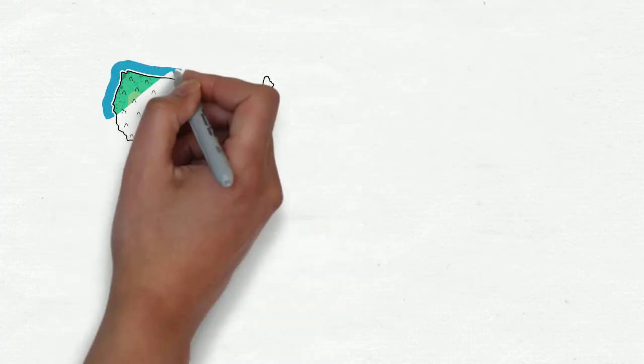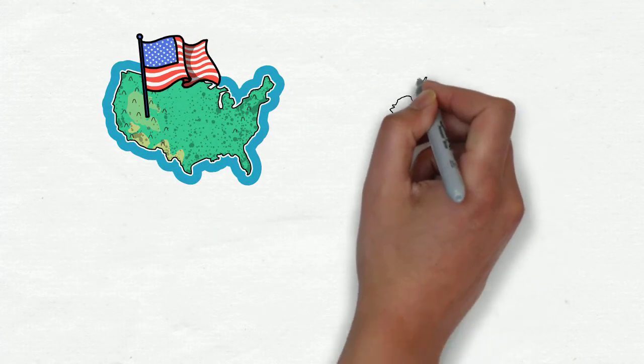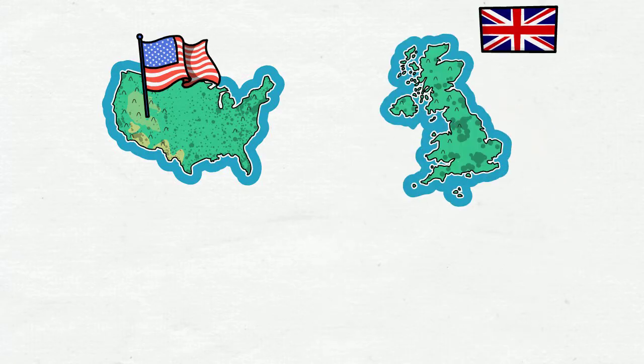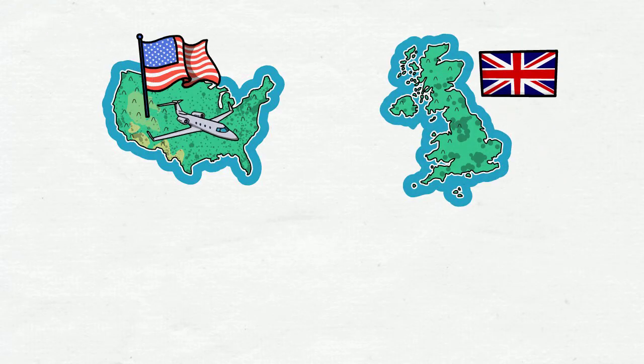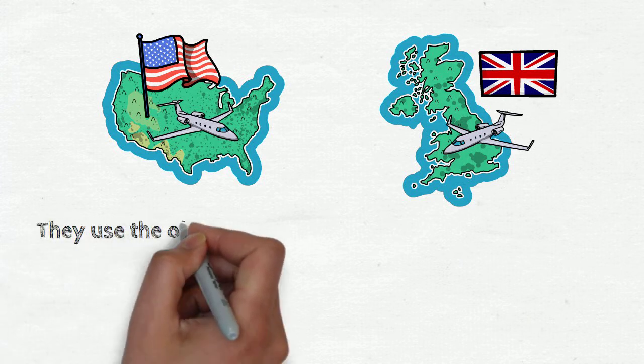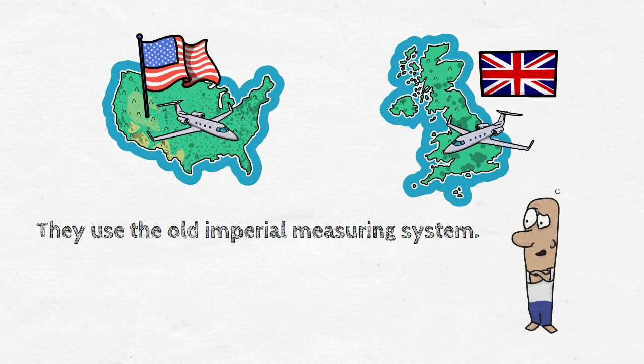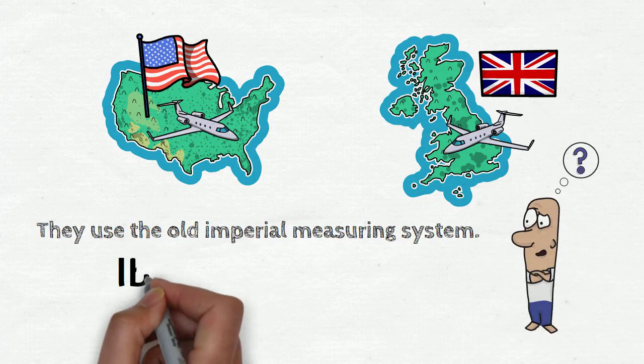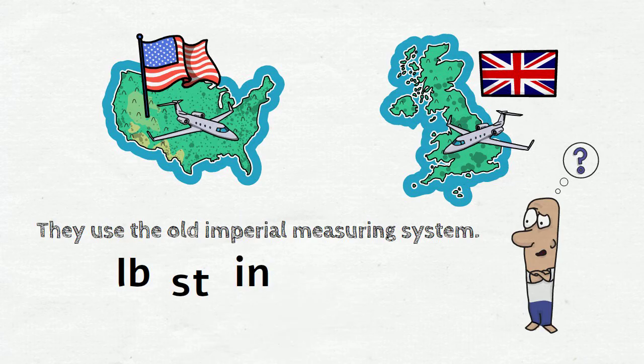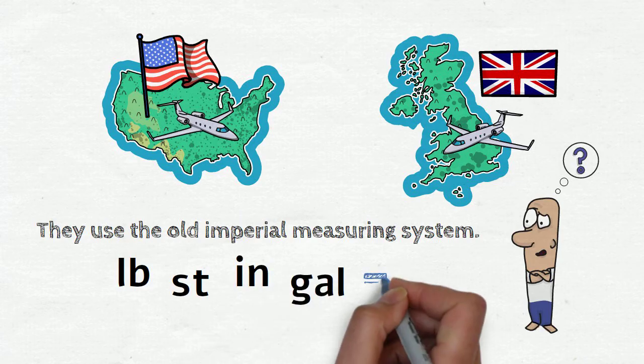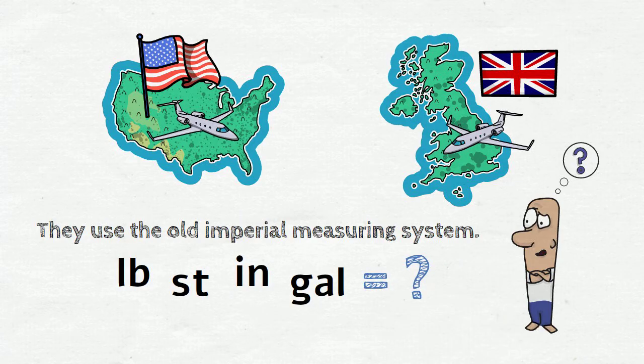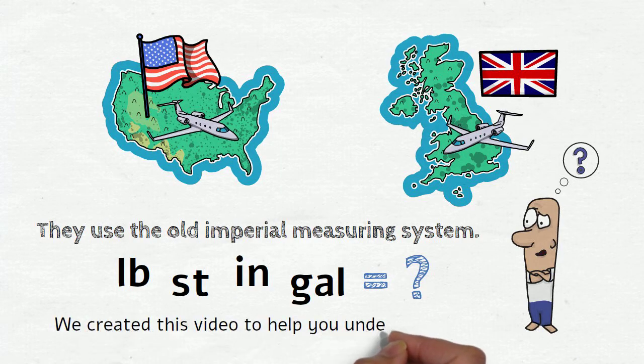If you ever came to visit an English-speaking country like the USA or the UK, you have probably noticed that they still use their old imperial measuring system, which may be confusing to you. All the pounds, stones, inches and gallons are units that you may not be familiar with. We created this video to help you understand them.